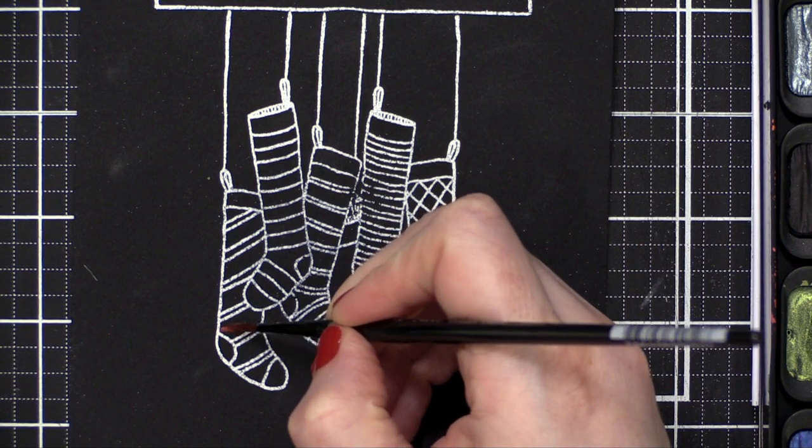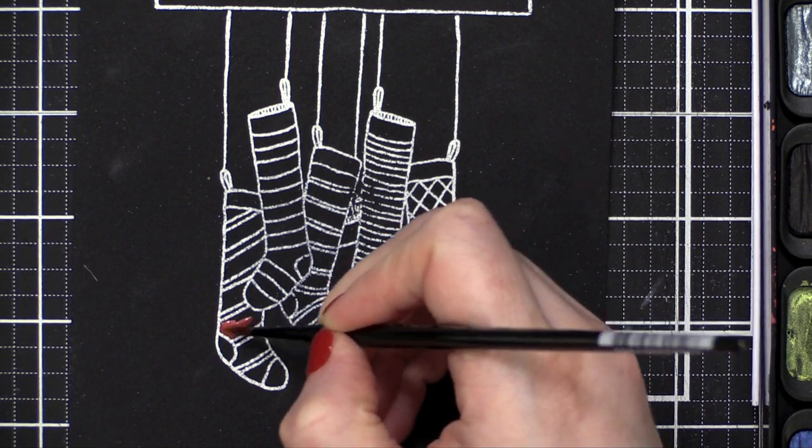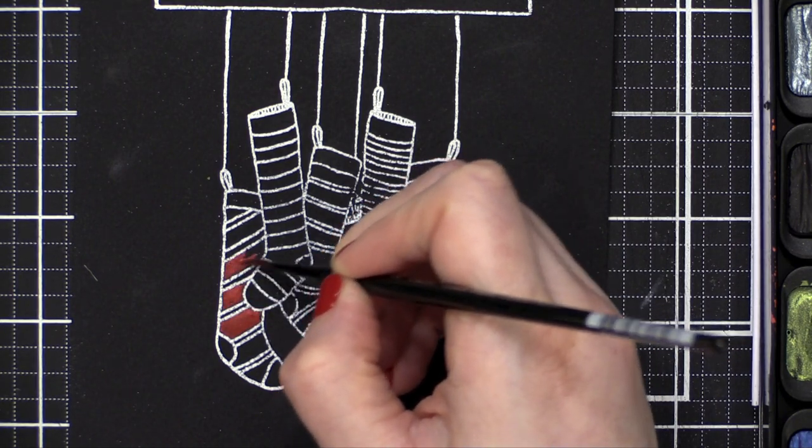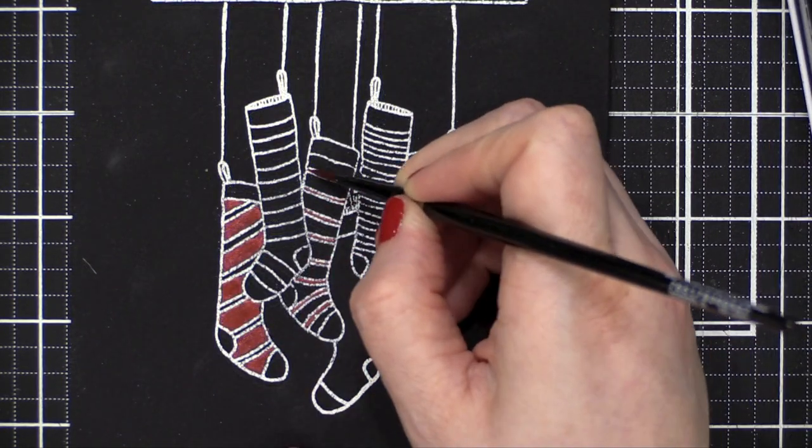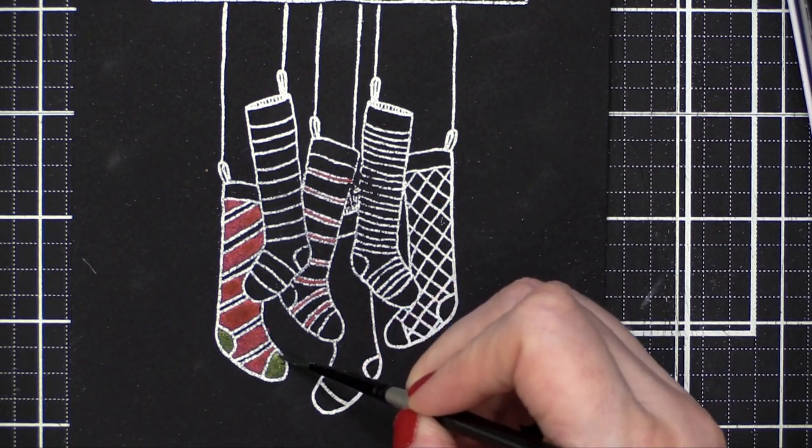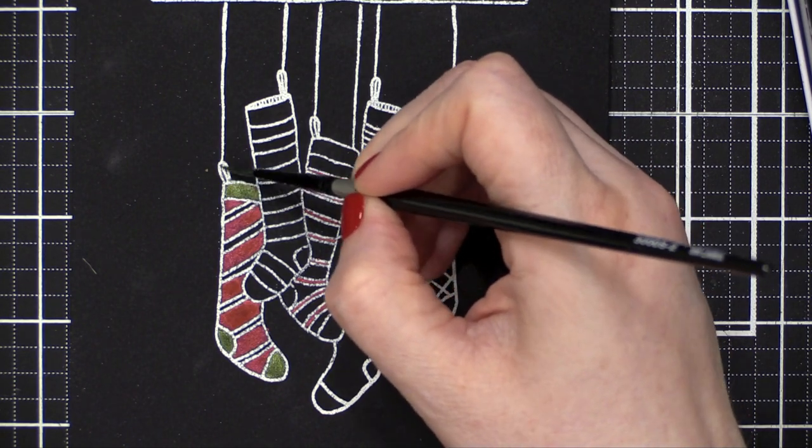Starting out with the red shade and putting that right down onto the stocking. I'm kind of trying to paint all of the areas of each color all at once before moving on to the next color, so I'm going to try to paint all of the red all at once, all of the green.